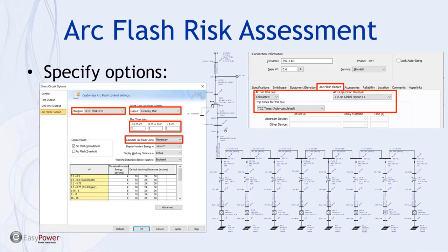Control options on the bus-by-bus or enclosure-by-enclosure basis are under the arc flash hazard tab. Users can select to have the program calculate arc flash, exclude buses if arc flash energy calculations aren't needed at that location, hard-code in values (though not typically recommended for PV facilities), or select static or fixed clearing times for buses to simulate the effect of things like a transformer differential zone.